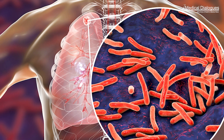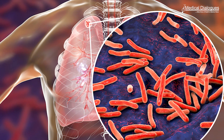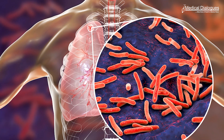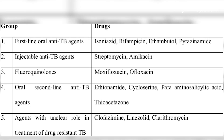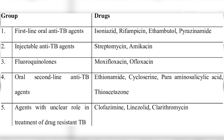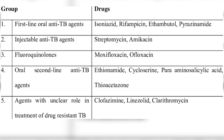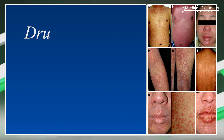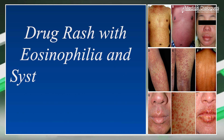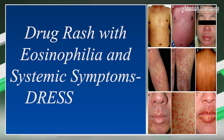We all know that tuberculosis is a common infection that presents itself with various types of manifestations. Anti-tubercular drugs are known for their toxicities but still they are the drug of choice in such situations. However, it is the drug rash with eosinophilia and systemic symptoms — the DRESS reaction — which is a rare toxicity secondary to the anti-tubercular drugs.